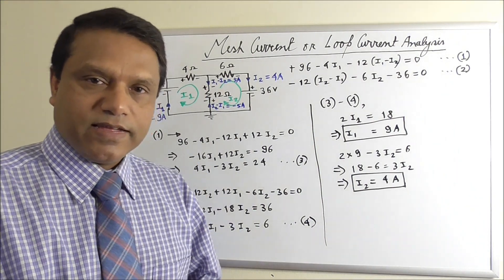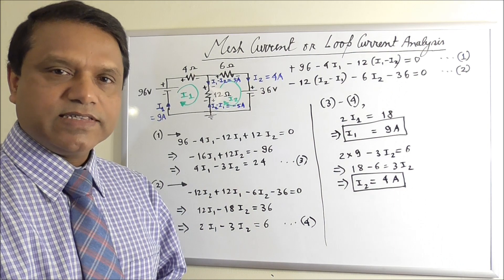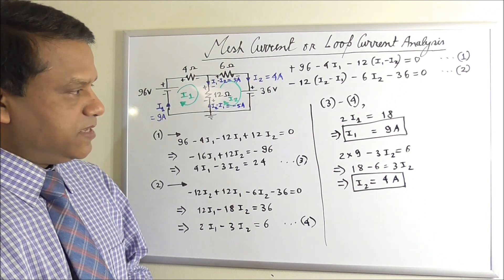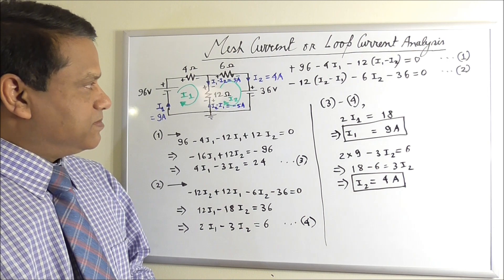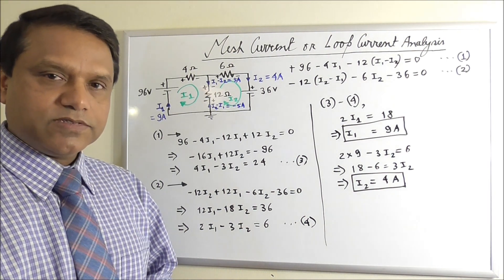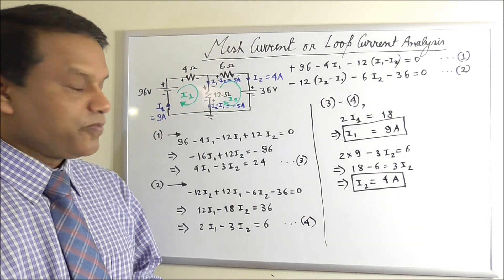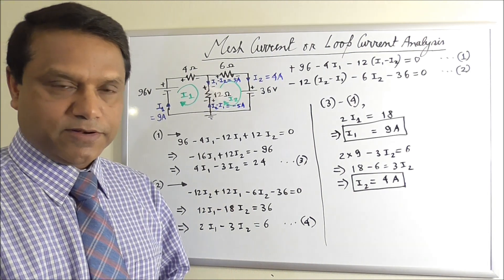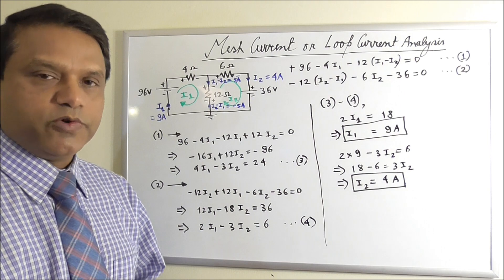So this is mesh current or loop current analysis. And this is very convenient and useful. As you see, we reduce the number of variables in this method to only 2 instead of 3 variables in branch current method.